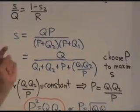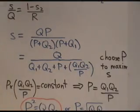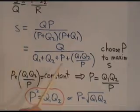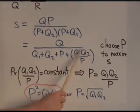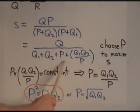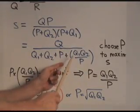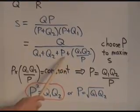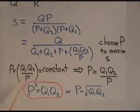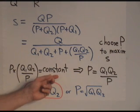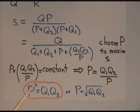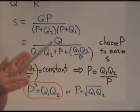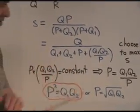Our problem is to choose P in order to maximize this quantity. Well, the Qs are all constant. So, it really is the same as asking which value of P minimizes this quantity. Because this quantity is in the denominator. Now, let's have a look at these two terms. If we multiply P and Q1, Q2 over P, we get something that's constant independent of P. So, our problem is to maximize the sum of two things if the product of those two things is a known constant.